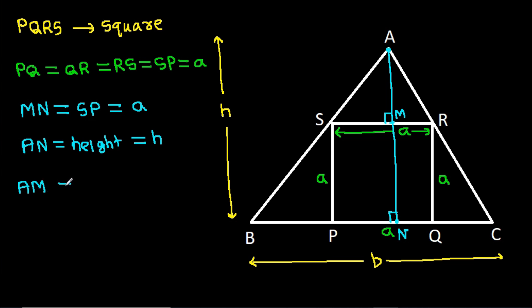So, AM will be equal to AN minus MN, that will be equal to H minus a. AM will be H minus a.